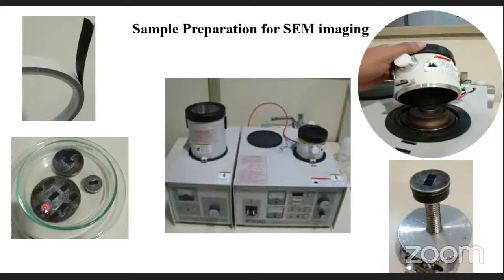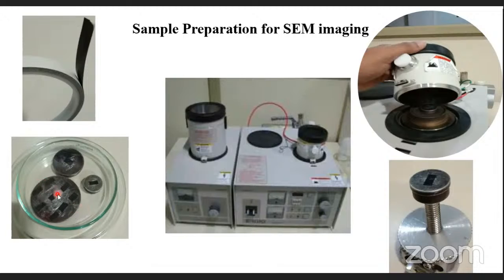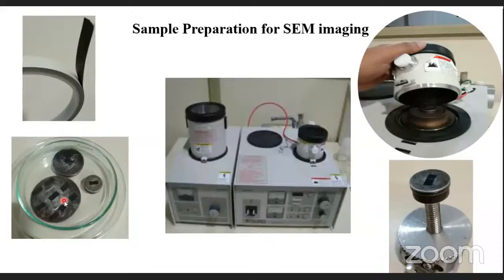The stub design depends on the instrument company, but for our instrument the advantage is that multiple samples can be analyzed in a single stub — around 10 to 12 small samples can be placed together. For powders, you can put a very small pinch of powder directly over the stub. If the sample is conductive, you can put it directly into the machine without any coating. If it is non-conductive, like polymers or biological samples, we use the gold sputtering unit.